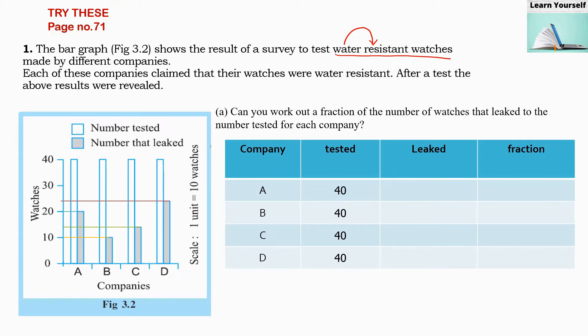Each of these companies claim that their watches were water resistant. After a test, the above results were revealed. So here we have to interpret the bar graph — what it is telling us. First, we will see that this blank bar tells us the number tested — how many watches they have tested.